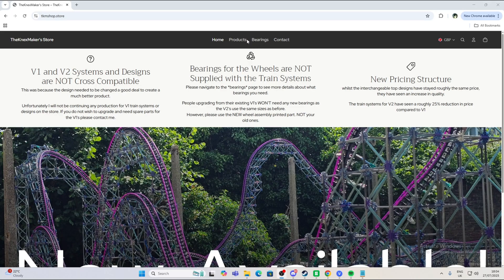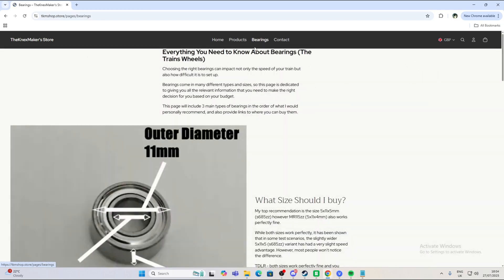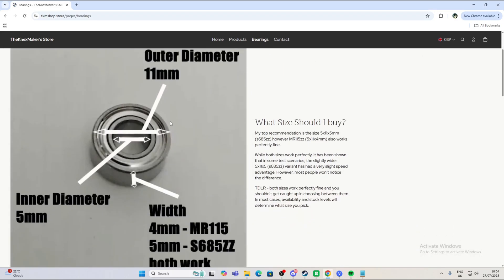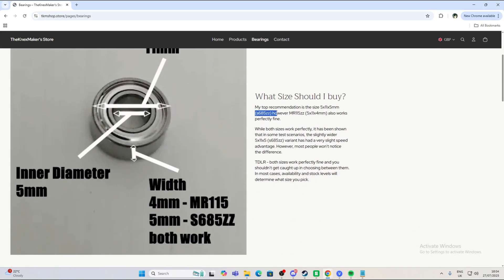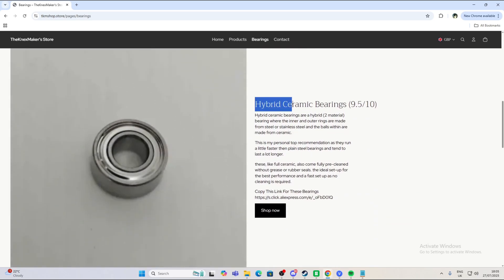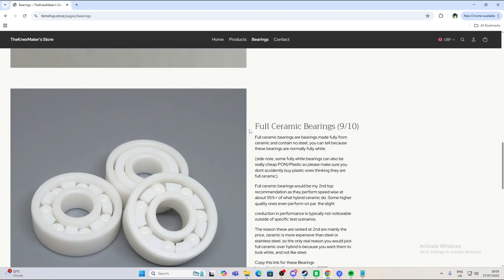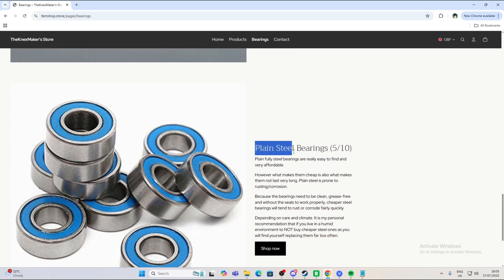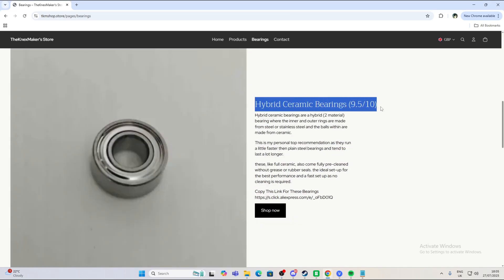There is also a page on my website dedicated just for bearings. It explains the two different sizes that you can use and the differences between hybrid, full ceramic, and even steel. Cost, longevity, and overall performance is very different between all three of these types of bearings, and my personal recommendation would be the hybrid ceramic.